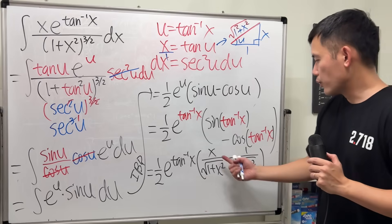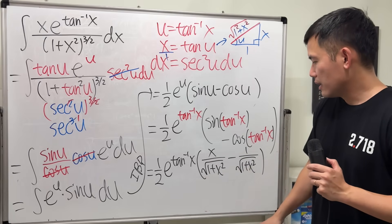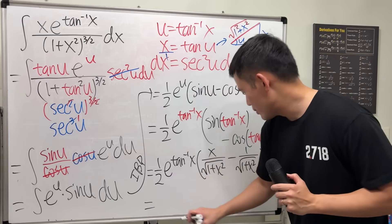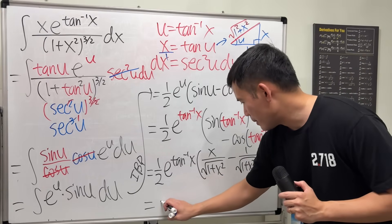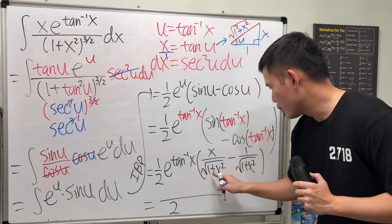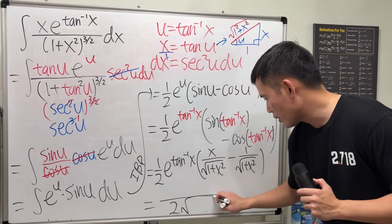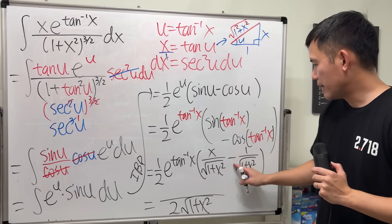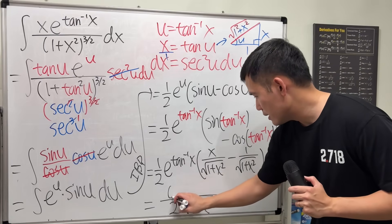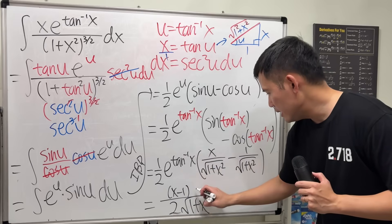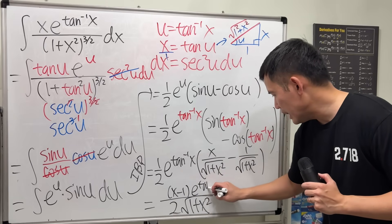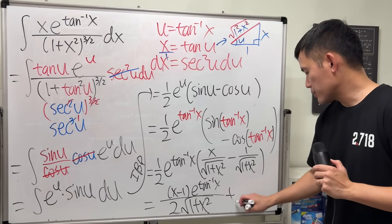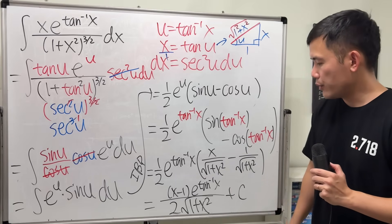That's pretty much it. You can also combine the terms together. Putting it all over a common denominator, the final answer is: e to the inverse tangent of x, times (x minus 1), over 2·√(1+x²), plus C.